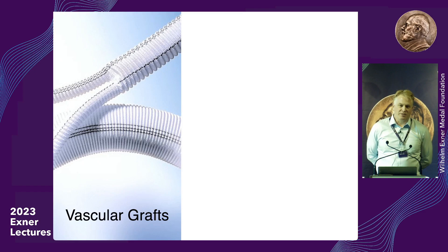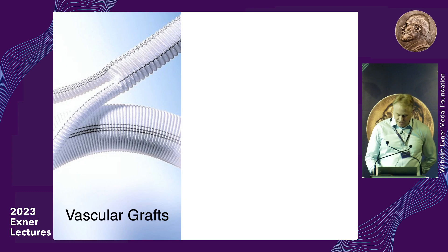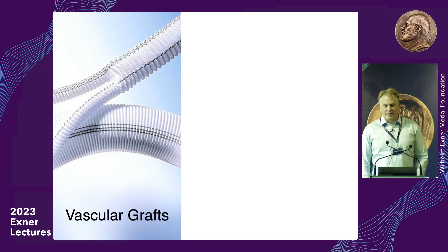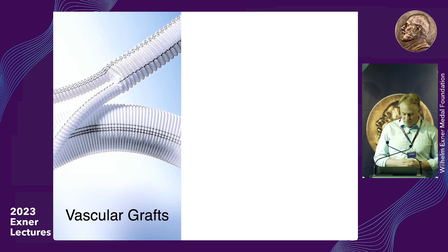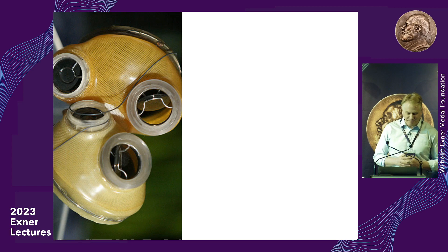I want to give a couple early examples of what scientists and doctors used to build medical devices. For vascular grafts, there was a surgeon in Texas who needed something he could sew with — and thinking of sewing clothing, the first vascular grafts were actually made of Dacron. This trend really drove early medical devices.